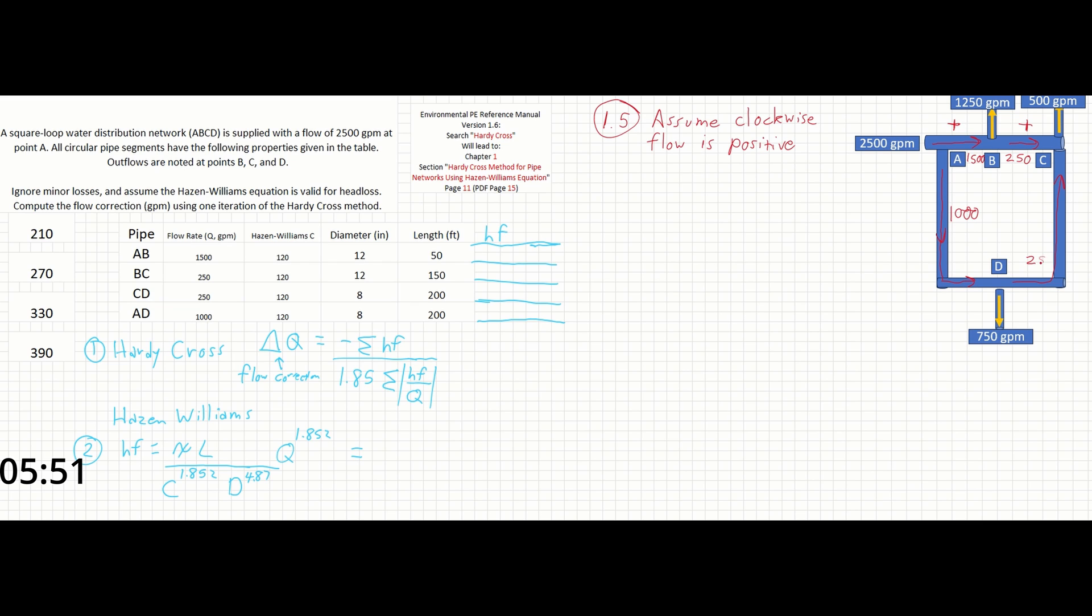Since this direction is counterclockwise, A to D is going to be negative and D to C is also going to be negative. That 250 and that 250 finalizes our numbers to show that we have 2500 gallons per minute going in and a total of 2500 gallons per minute exiting as well. Going back over to our table, we can see that A to B is going to be positive, B to C is going to be positive, C to D is going to be negative, and A to D is going to be negative. This will help us as we solve out the Hazen-Williams equation.